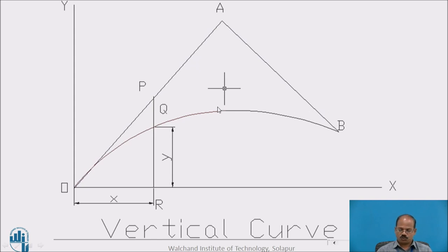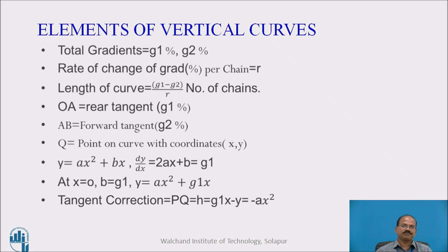As has been shown in the earlier slide, the OA is equal to rear tangent as G1 percent and AB is forward tangent with G2 percent. Q is the point on curvature with coordinate X and Y. The formula for parabola is Y = AX² + BX, this is the geometrical formula.